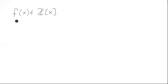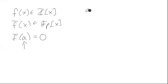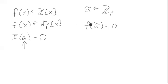Suppose that we have a polynomial f in Z[x] and consider its reduction mod p, where p is a prime. Suppose that we have an element a of F_p that is a root of this polynomial mod p, and what we'd like to do is lift this a up to an element ã of Z_p — the p-adic integers — such that f(ã) = 0, i.e., ã is a root of this polynomial in Z_p.